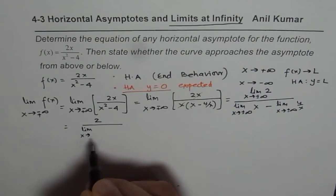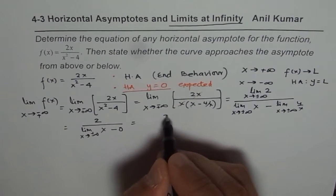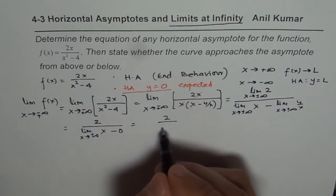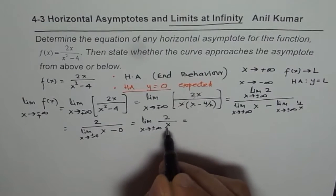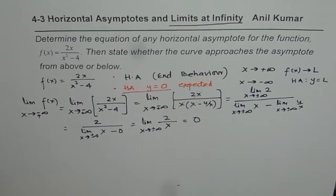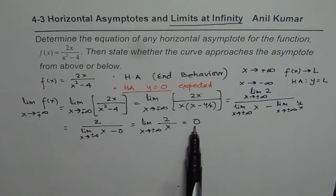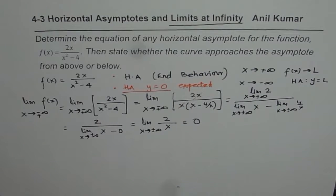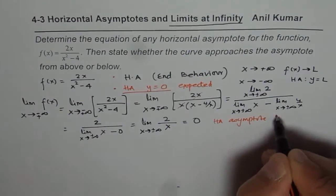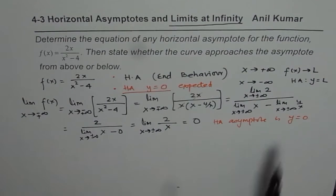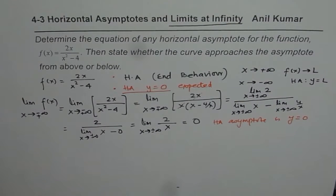So we have the limit as x approaches positive or negative infinity of x minus — and the limit of 4 over x is 0. This simplifies to the limit as x approaches positive or negative infinity of 2 over x. Now, if x is very large, this function approaches 0 — in both the negative and positive infinity cases. Since 0 is a fixed value, the horizontal asymptote exists and is y = 0.